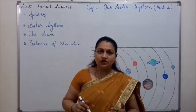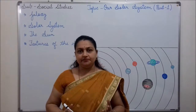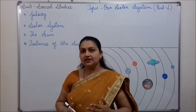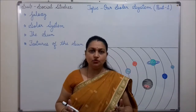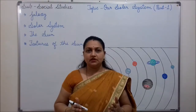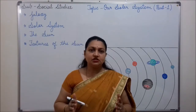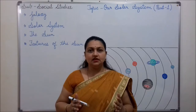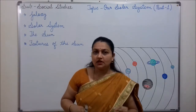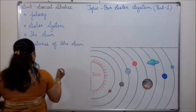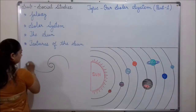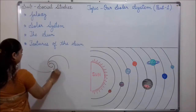Now I explain what is a galaxy. A number of solar systems, stars, planets and moons form a galaxy. The galaxy in which our earth lies is known as the Milky Way. Its shape is spiral, like this.